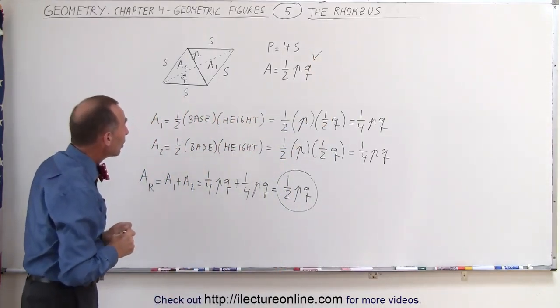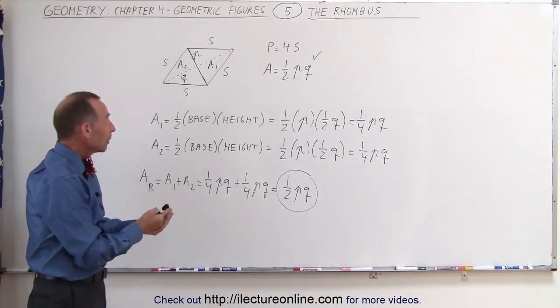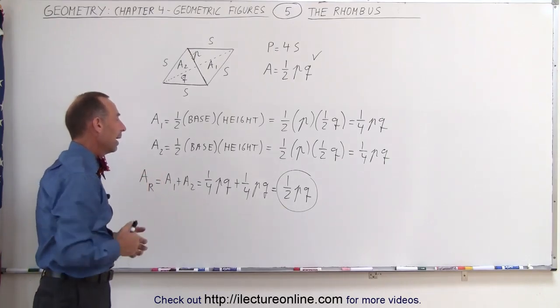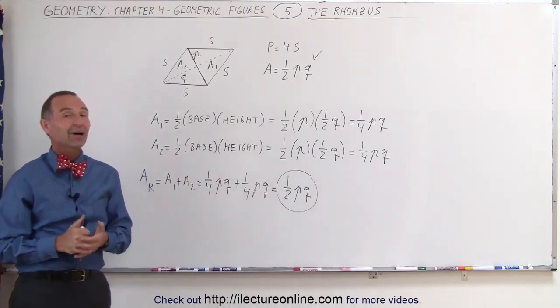So to find the area of the rhombus we need to know the length of the two diagonals, we simply multiply those together, divide by two, and you get the area. And that's how it's done.